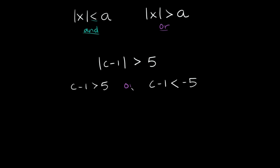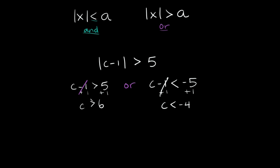To solve for c, add 1 to both sides on the first inequality — those cancel out — so c is greater than 5 plus 1, which is 6. On the other side, same thing: add 1 to both sides, those cancel out, so c is less than negative 5 plus 1, which is negative 4. Our solutions are: c is greater than 6, or c is less than negative 4.